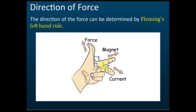This finger shows the magnetic field, this one shows the current, and this one shows the force. As long as you know the direction of the magnetic field and the direction of the current, you can determine the direction of the force. This is called Fleming's Left-Hand Rule.